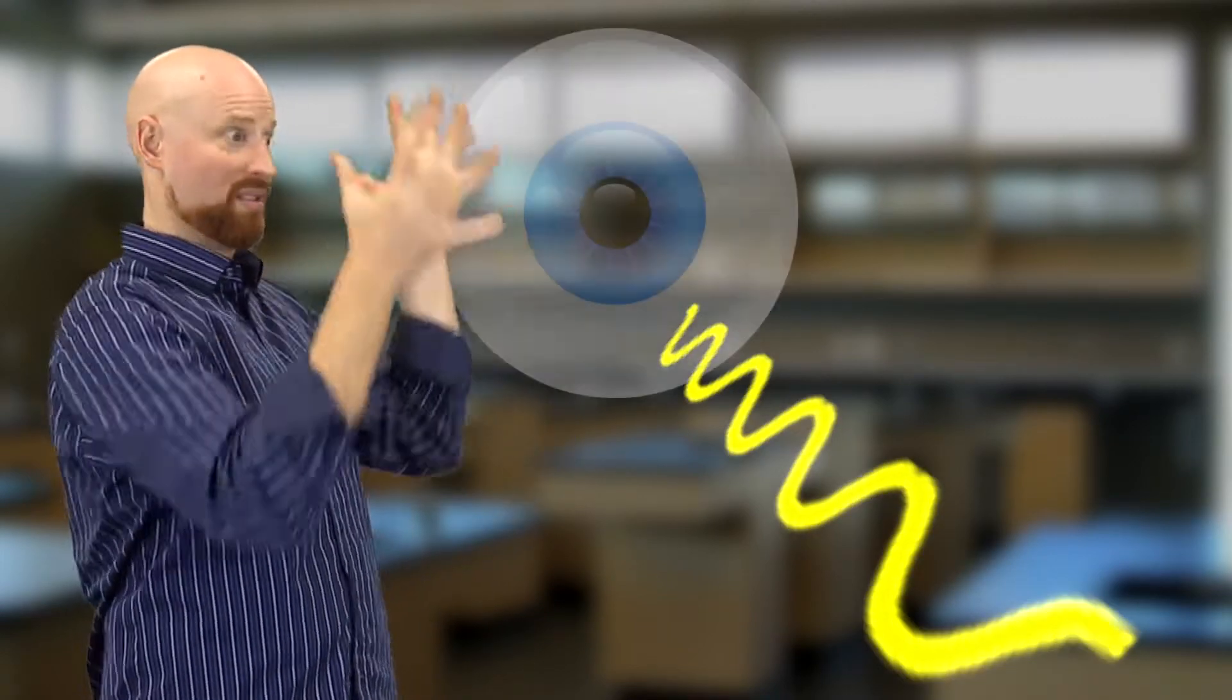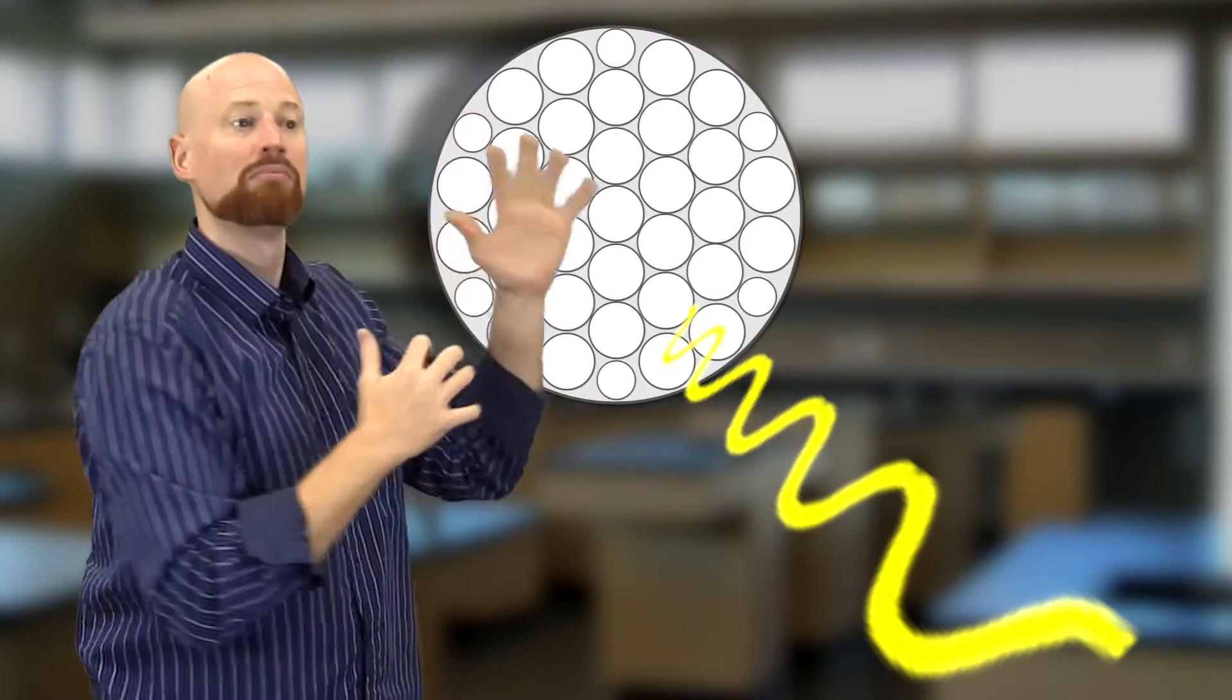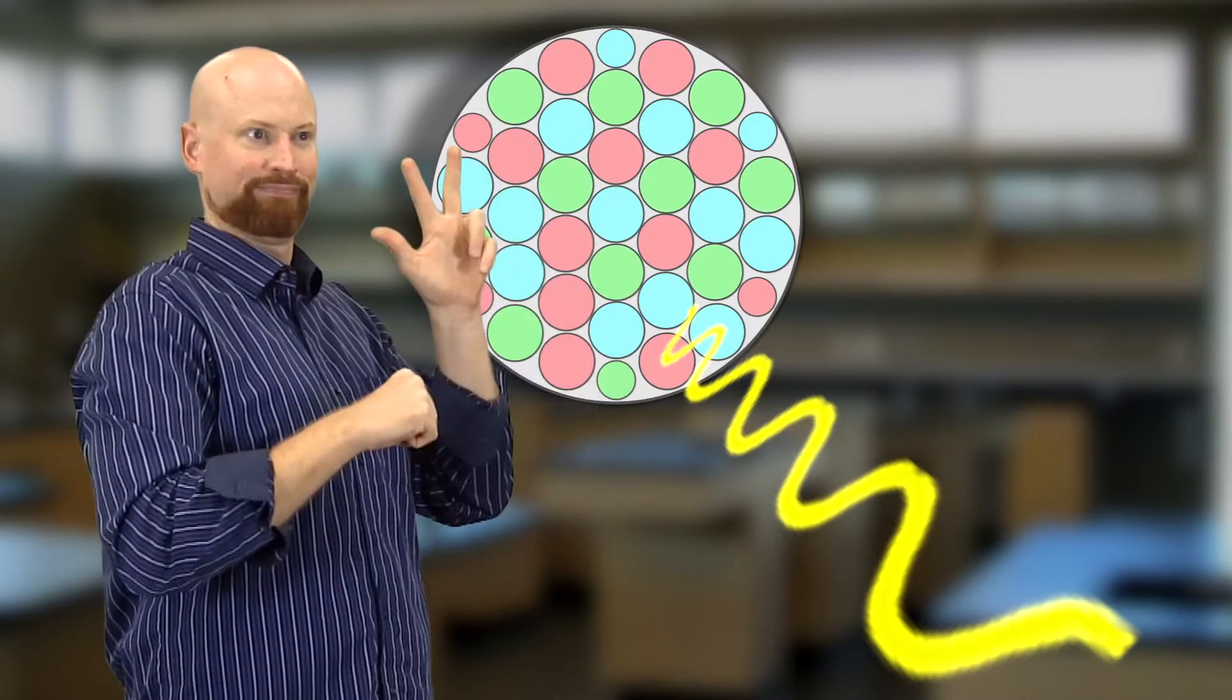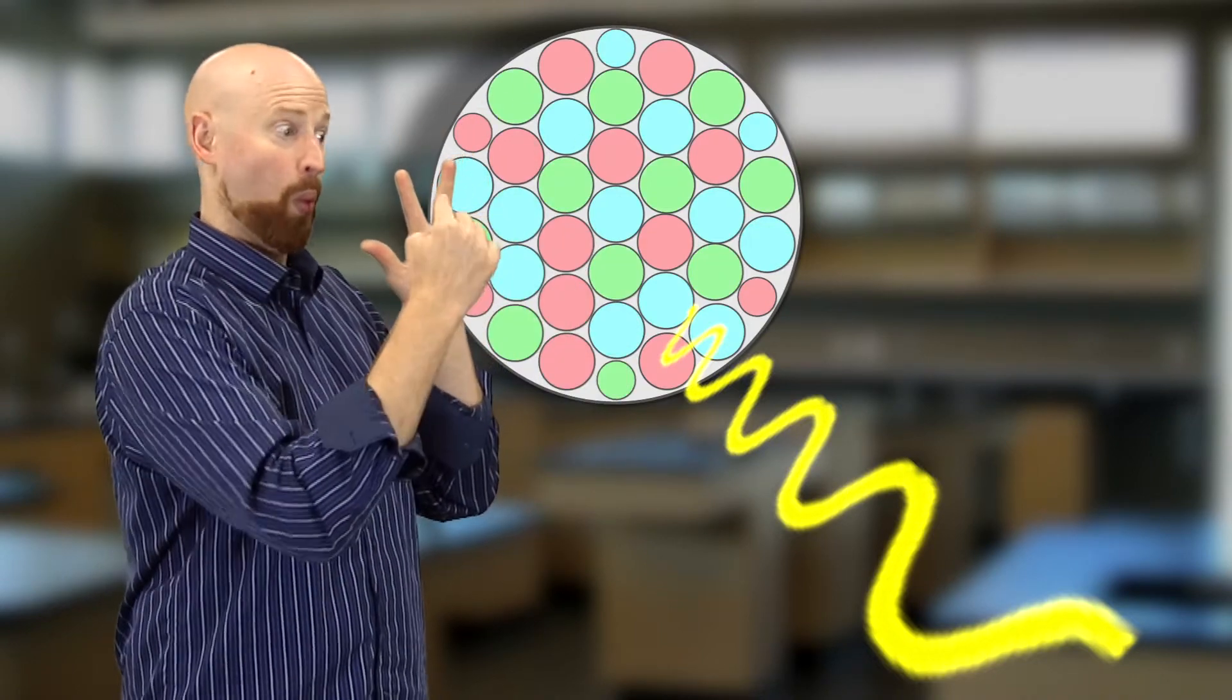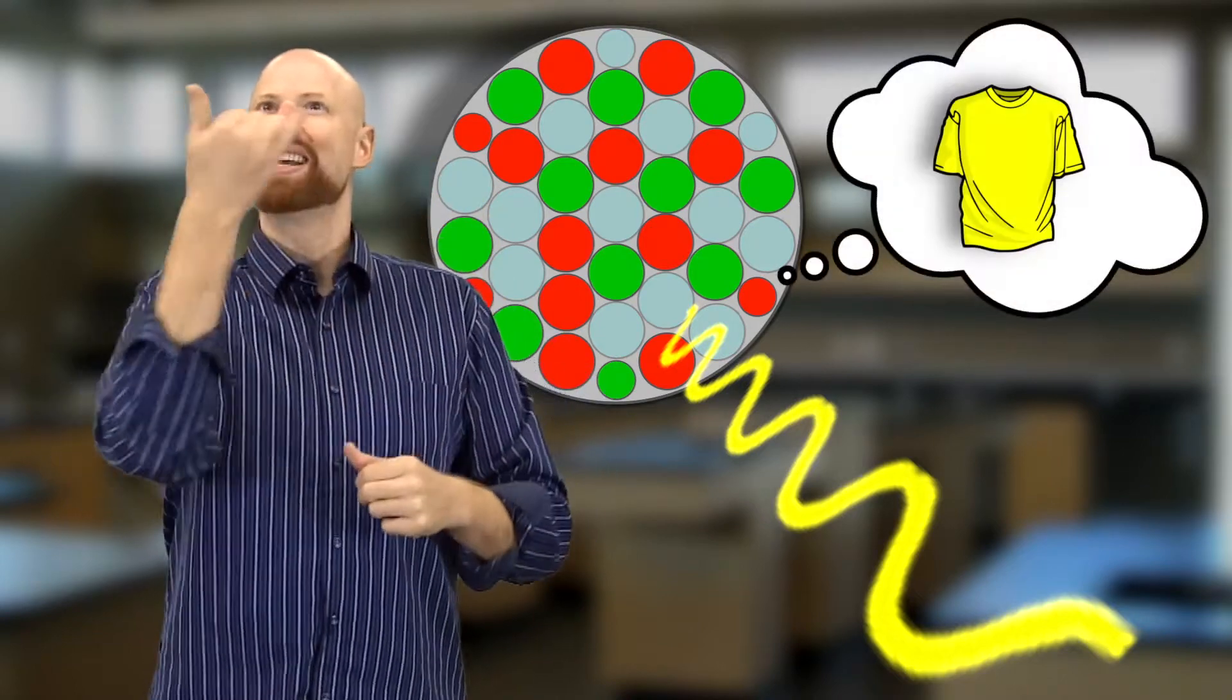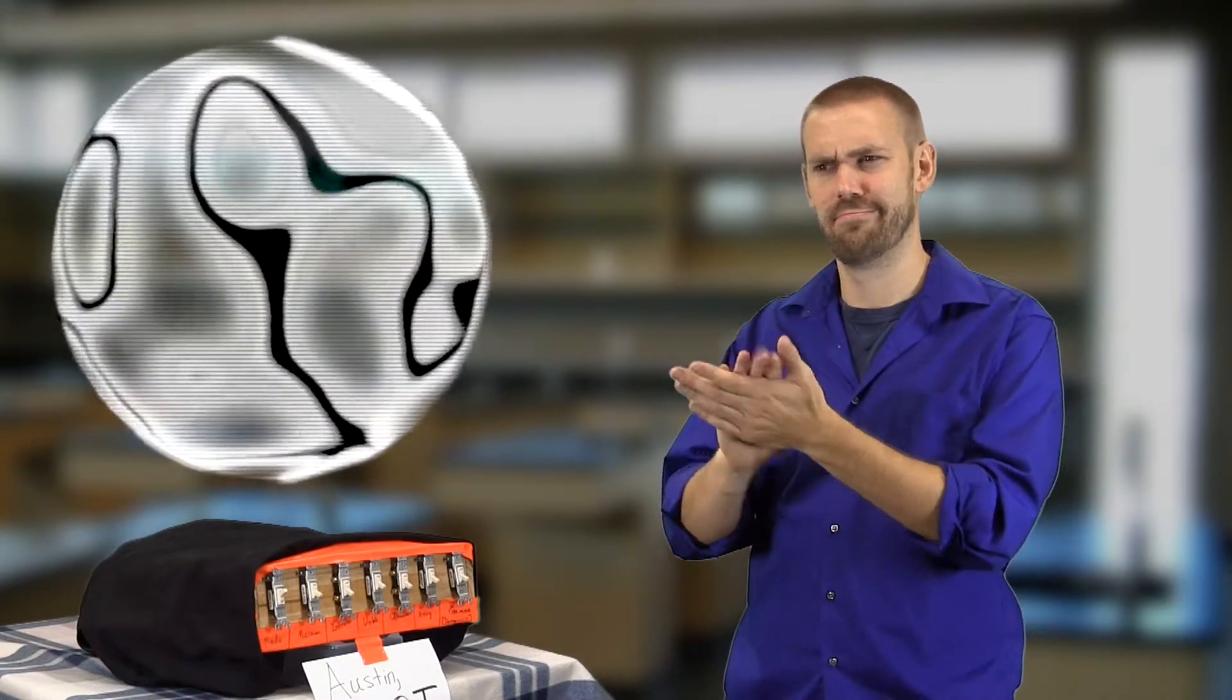So, in the back of your eye, you have a bunch of what you call cones. Now, there's actually three kinds of those cones. You've got blue, red, and green. And when that yellow frequency hits the cones, then the red and the green ones activate, and your brain interprets that as seeing the color yellow. Well, actually, that's actually correct. Good job.